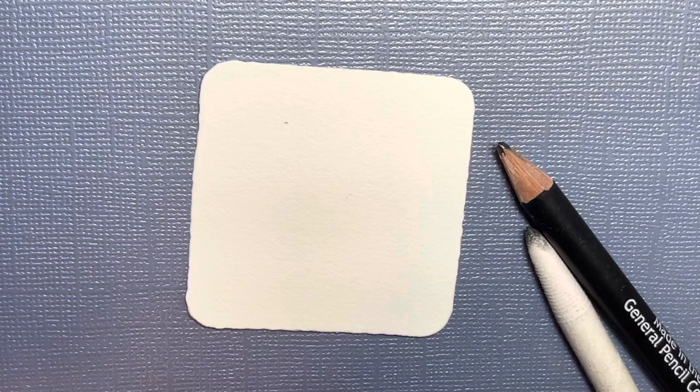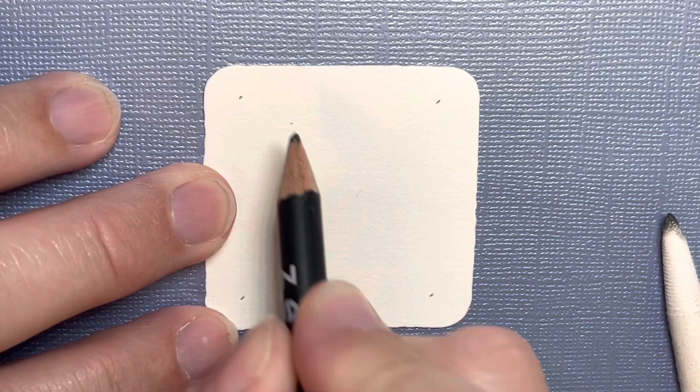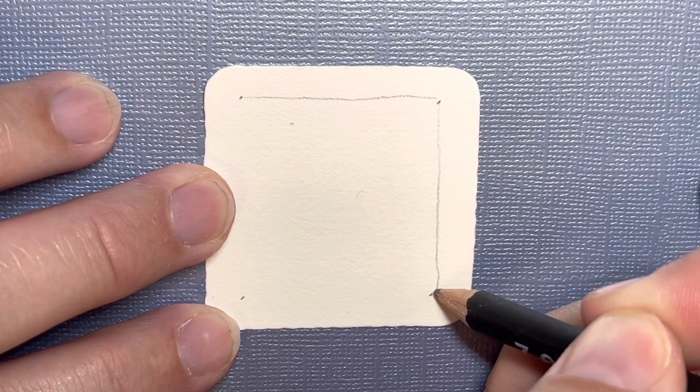All right, and to start, I like to begin with pencil. And we're going to start by putting a dot in each of the four corners. And then we're going to connect those dots with a line.